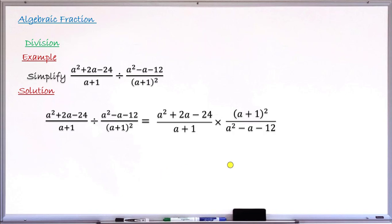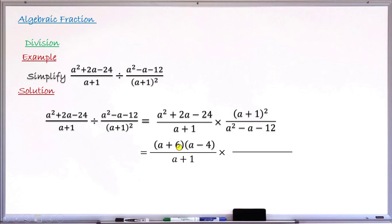The next step says: factorize all expressions that are factorizable. I can see the numerator of the first fraction and the denominator of the second fraction are factorizable — both are quadratic expressions. Factorizing (a² + 2a − 24) gives (a + 6)(a − 4). Factorizing (a² − a − 12) gives (a − 4)(a + 3).